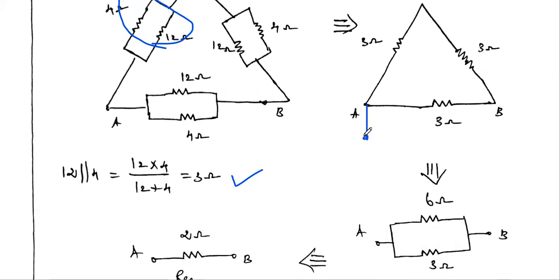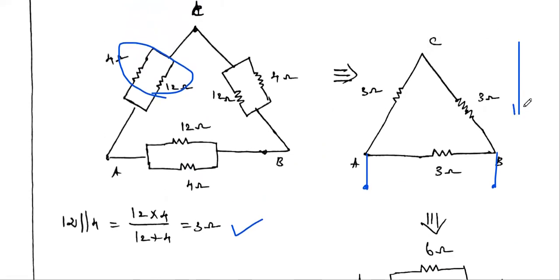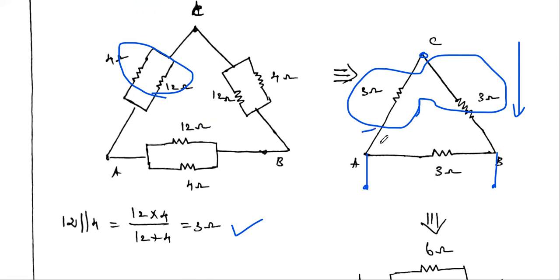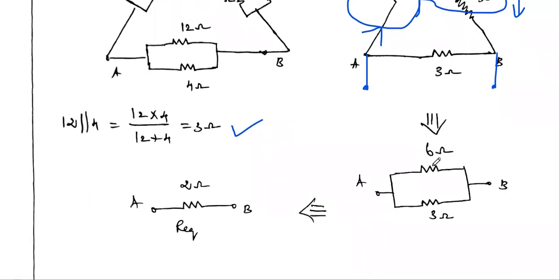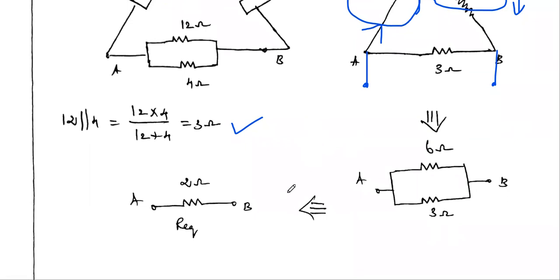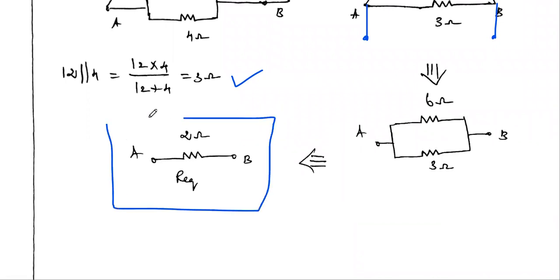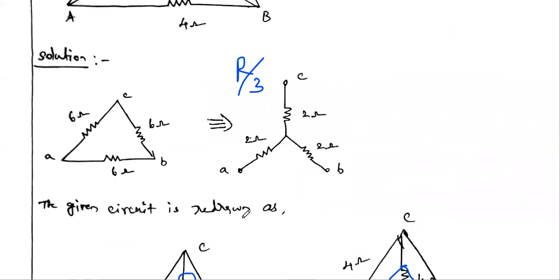Replace with 3 ohm, 3 ohm, 3 ohm delta. To find resistance across A and B, reduce from the opposite direction. The 3 ohm from A–C and 3 ohm from C–B are in series: 3 + 3 = 6 ohms. This 6 ohm is in parallel with the 3 ohm directly across A–B: (6 × 3) / (6 + 3) = 2 ohms. The equivalent resistance across terminals A and B is 2 ohms.